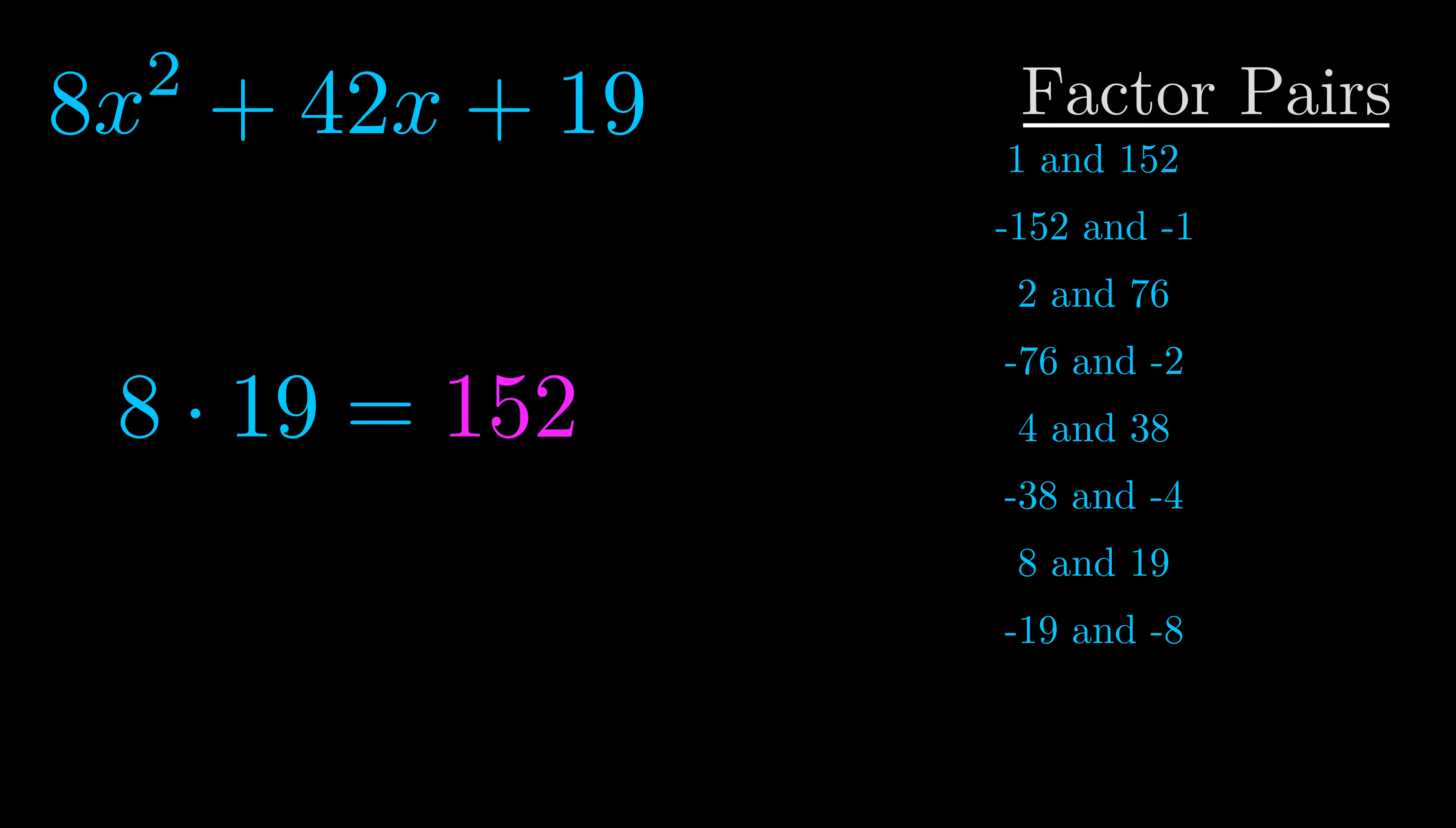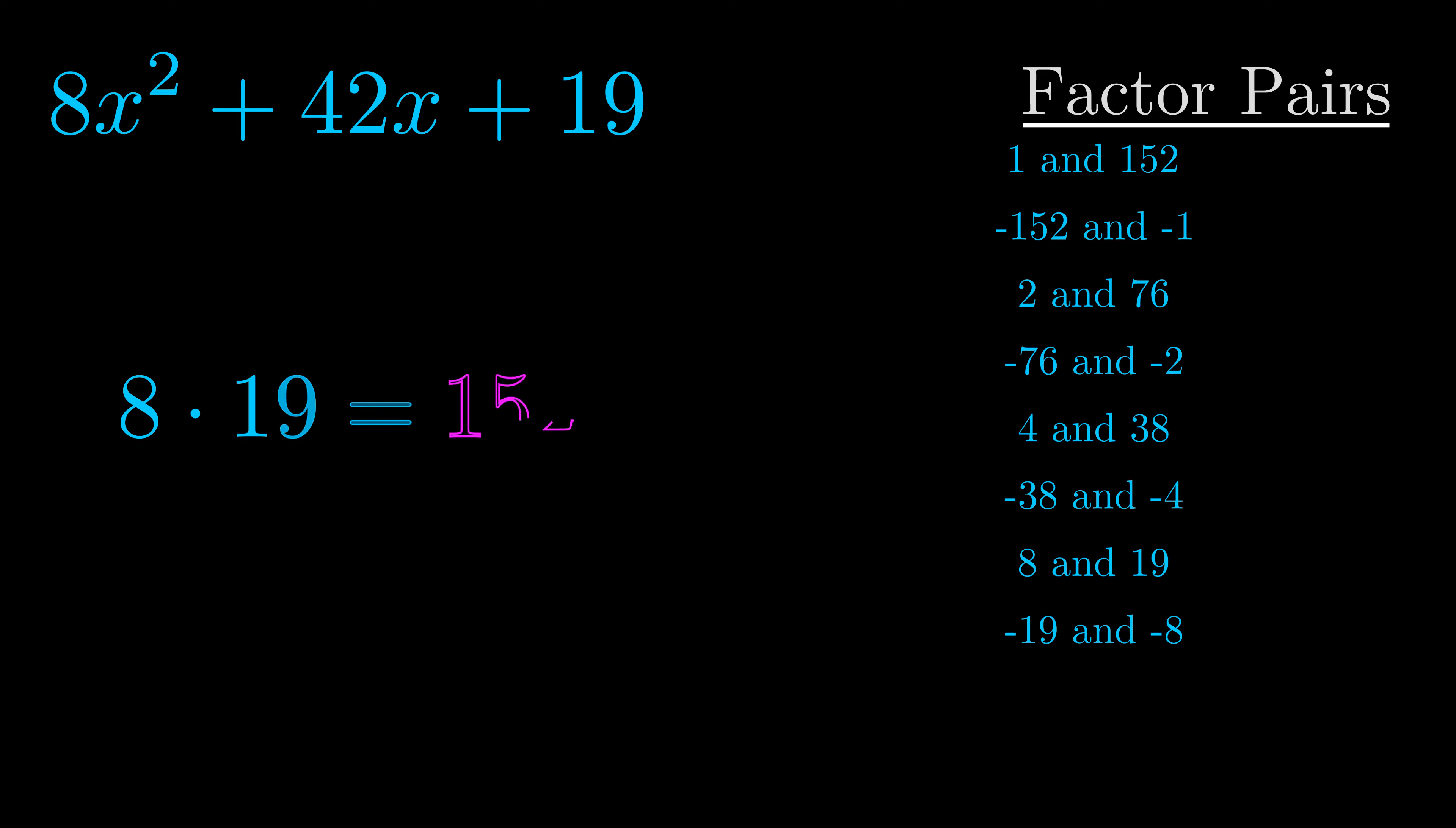Now once you have these factor pairs the goal is to find which of these pairs adds to the b value. The b value is the coefficient on the x term. That's the middle term, the one that we haven't done anything with yet. And really this is the only factor pair that we need.